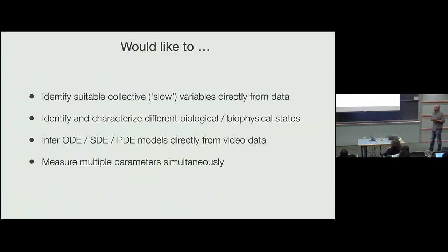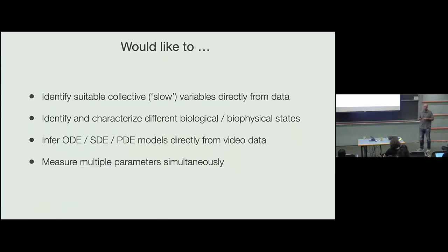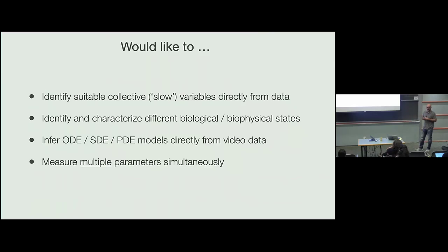What are the challenges? The first is identifying a suitable set of collective variables — in physics you'd call them slow variables. You can also ask about the properties of the noise on top of those. We'd use those variables to characterize and identify different biological states and behaviors, then translate them into an inference framework. Ideally you want an inference framework that makes life easier for experimentalists. For active nematic theory, it's very hard to measure all parameters experimentally. But if you could take a video and infer all parameters directly, that would make life much easier.